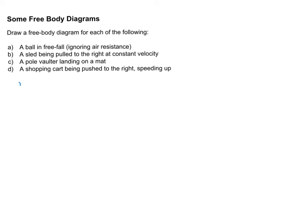For a ball in free fall, or anything in free fall under the influence of gravity alone, we just draw gravity. So force down, label it F sub G, and that is it. There is no normal force, there's no friction. It says ignore air resistance, so that is it.